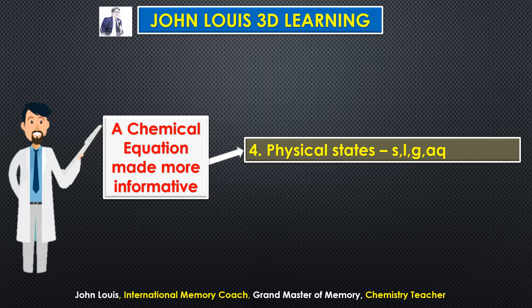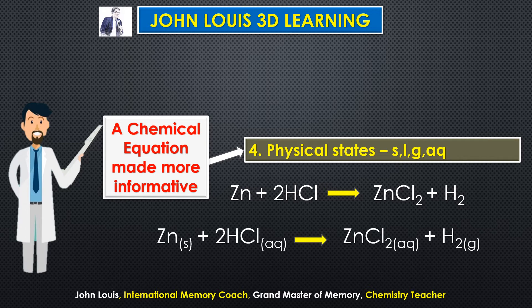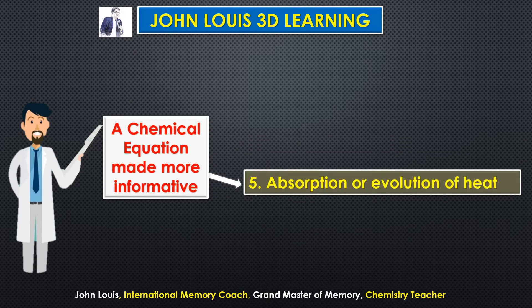The fourth point is physical states. For example: zinc (s) plus hydrochloric acid (aq) gives zinc chloride (aq) plus hydrogen (g). Here, 's' stands for solid, 'aq' stands for aqueous — meaning the HCl gas is dissolved in water to form a solution — and 'g' stands for gas. All physical states are mentioned for all reactants and products.